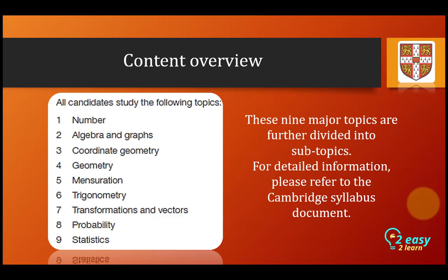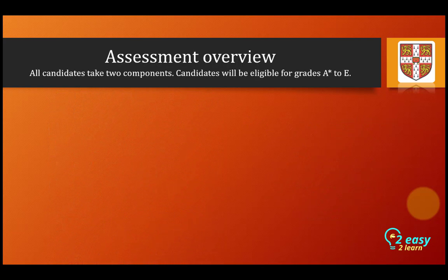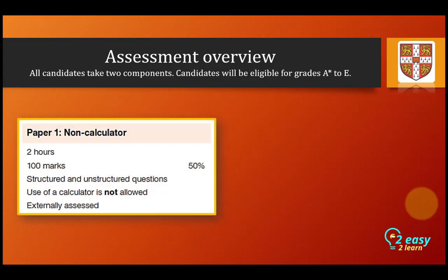For detailed information, please refer to the Cambridge syllabus document. Assessment overview: all candidates take two components. Candidates will be eligible for grades A* to E. Paper 1 is a non-calculator paper — use of a calculator is not allowed. The time is two hours, marks are 100, and there are structured and unstructured questions that will be externally assessed.